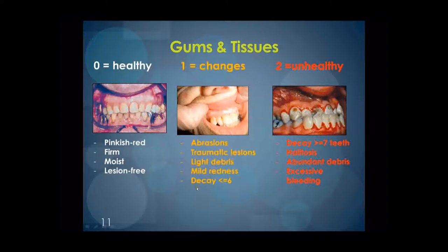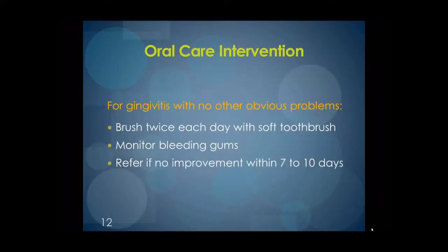Obvious decay in up to six teeth or any broken teeth would require referral, as would a sore under a denture. Level 2 or unhealthy findings include obvious decay in seven or more teeth, abundant amounts of debris, excessive bleeding, or palatosis. The oral care intervention for changes with no obvious problems is to brush twice a day with a soft toothbrush, monitor bleeding in the gum tissue, and refer if no improvement is seen within seven to ten days.